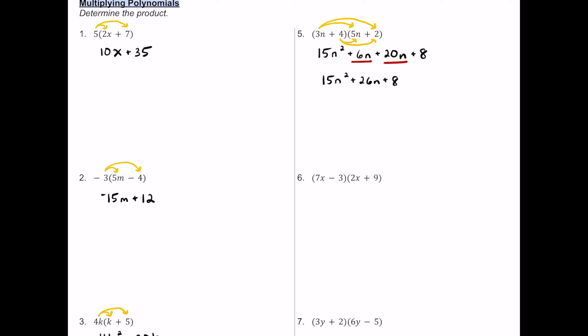For number six, we have another binomial times a binomial. 7x times 2x: 7 times 2 is 14, x times x is x squared, giving 14x squared. Then 7x times positive 9 equals positive 63x. Moving to negative 3: negative 3 times 2x is negative 6x, and negative 3 times positive 9 is negative 27.